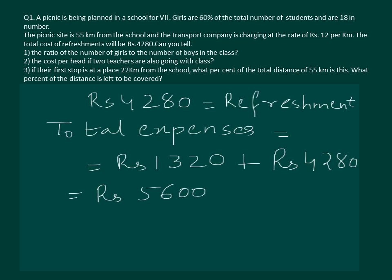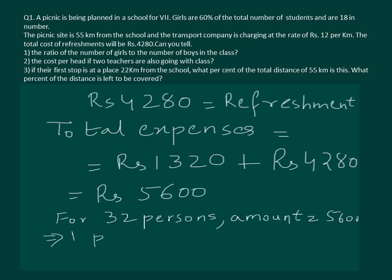Note that this amount has been spent by 32 persons. So for 32 persons, the total amount spent is 5,600 rupees. That means for one person it would be 5,600 divided by 32. On solving, we get rupees 175. Therefore the cost per person of the trip is rupees 175.